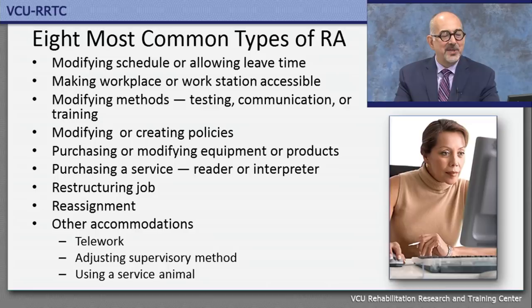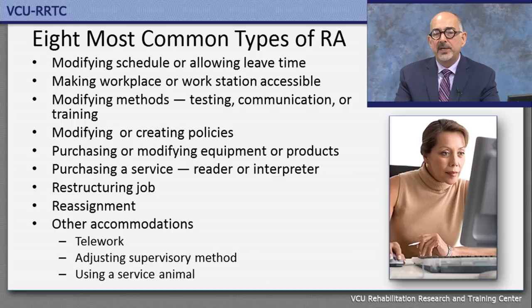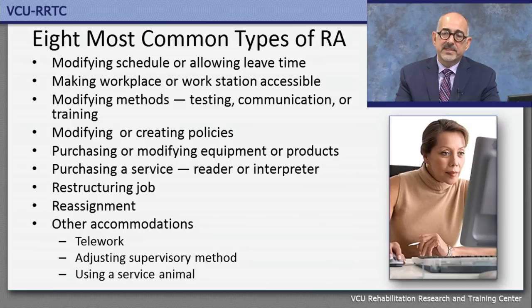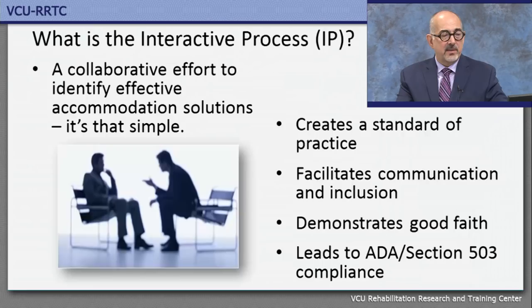Most accommodations are really strategies or techniques — not necessarily assistive technology. Sixth, purchasing a service like a reader or interpreter. Seventh, restructuring a job — modifying a job description to carve out marginal tasks so the person focuses on essential functions. Eighth, reassignment — if you've tried numerous times to accommodate a person in a specific job, consider reassignment to another open position they may be qualified for. Other accommodations include telework, adjusting supervisory methods, and allowing a service animal at work.